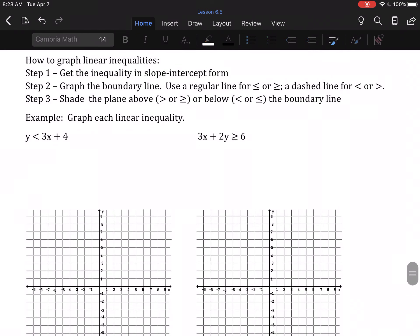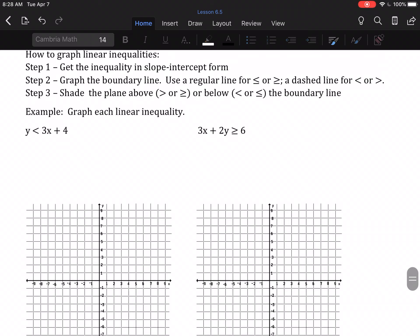Now graphing. First thing, get the inequality in slope-intercept form if it isn't already. You can see my first example is in slope-intercept form: y symbol mx plus b. The second one isn't yet. Graph the boundary line is step 2. That means plot your y-intercept, count off your slope, and then determine what kind of line you're going to be using. Will it be a solid line or a dashed line? And the last step is to shade the plane above or below the line.